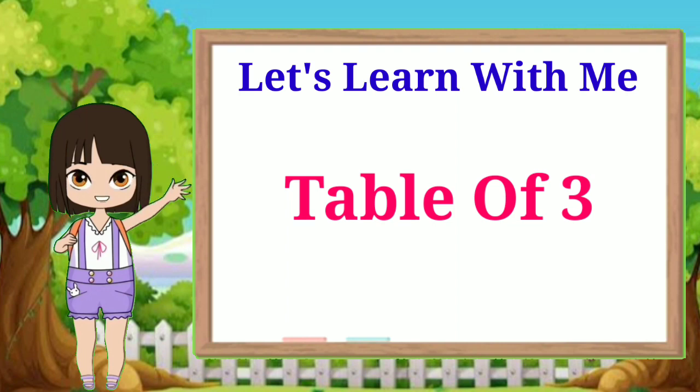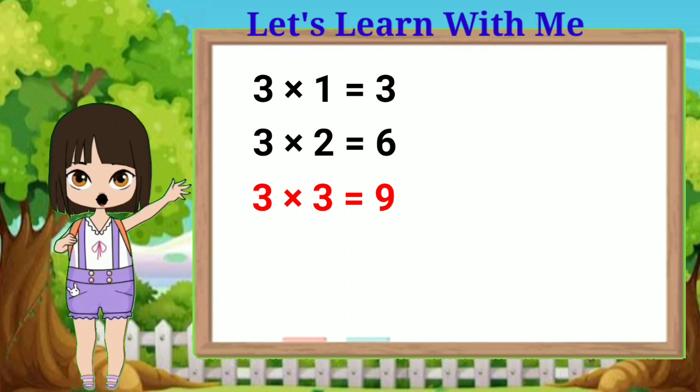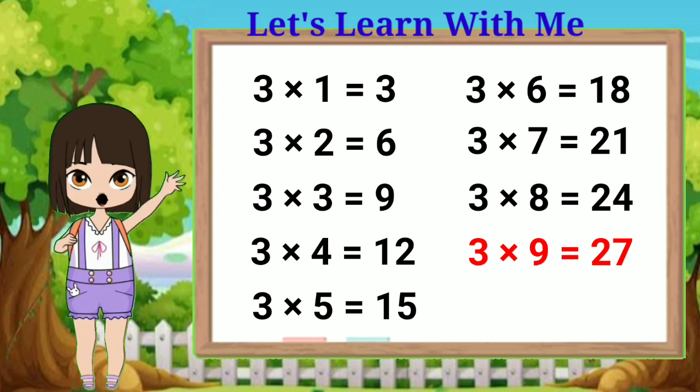So let's start. Three ones are three, three twos are six, three threes are nine, three fours are twelve, three fives are fifteen, three sixes are eighteen, three sevens are twenty-one, three eights are twenty-four, three nines are twenty-seven, three tens are thirty.